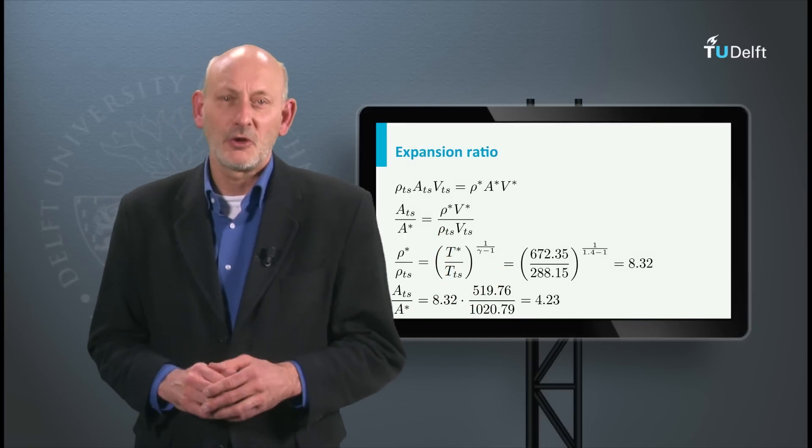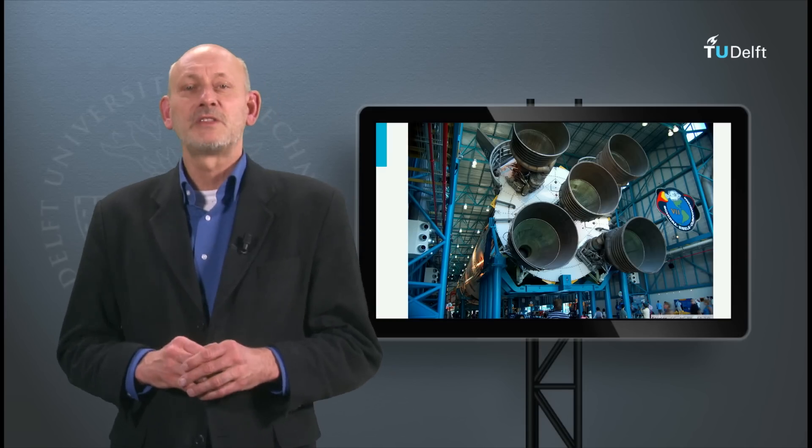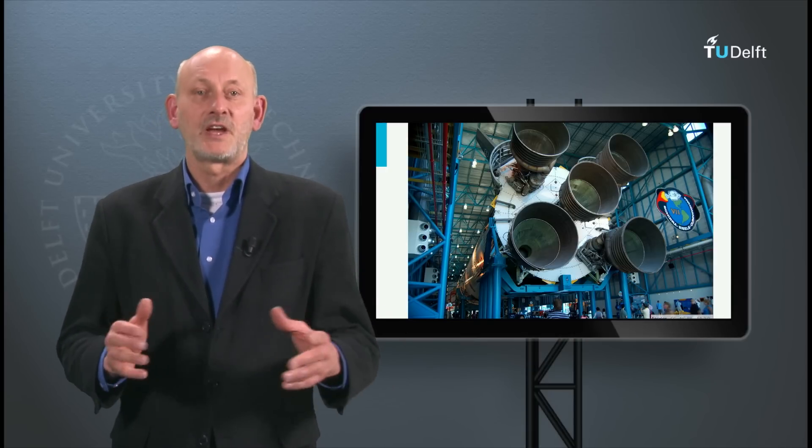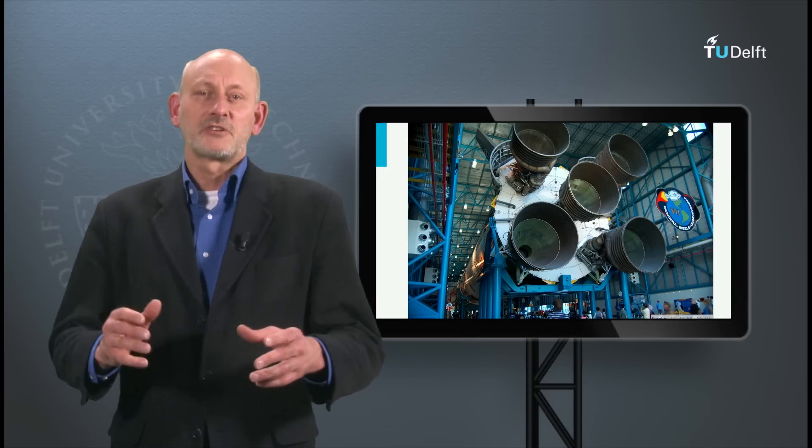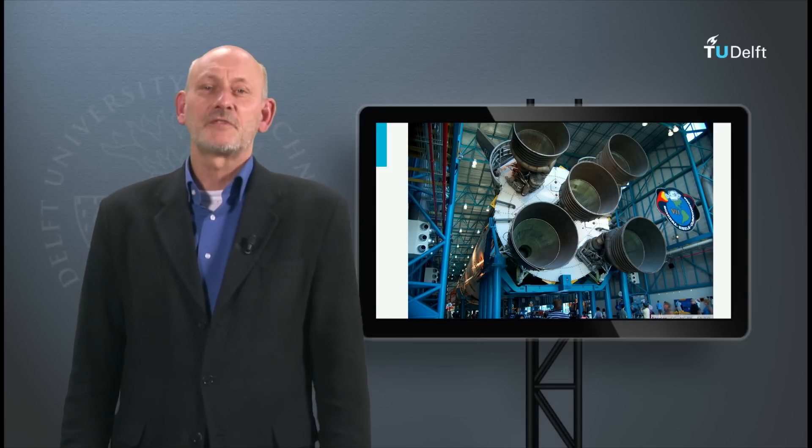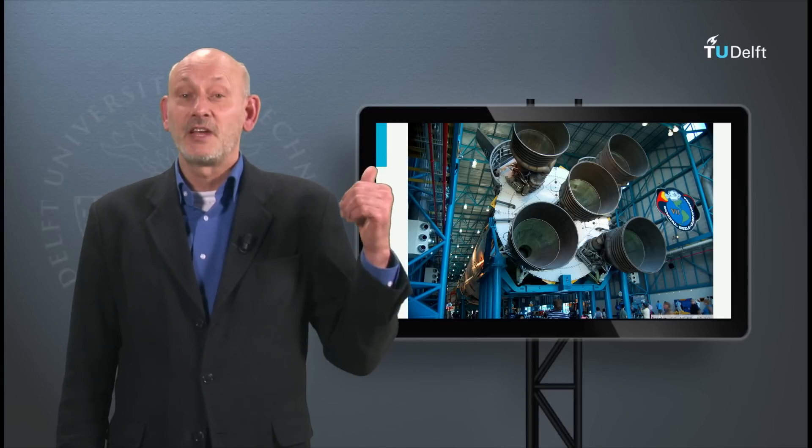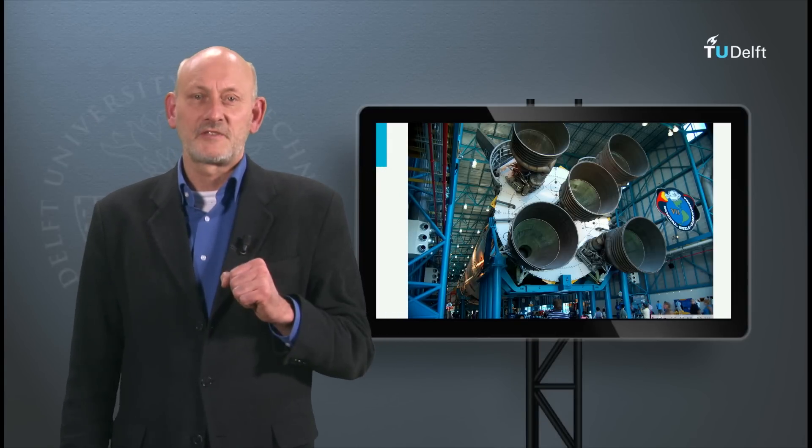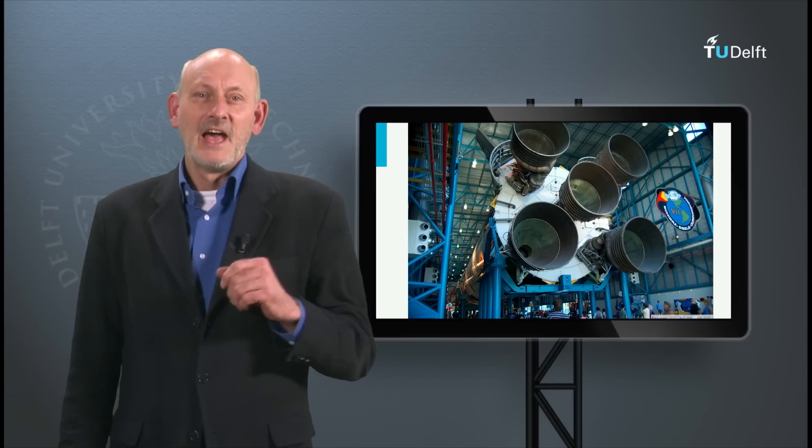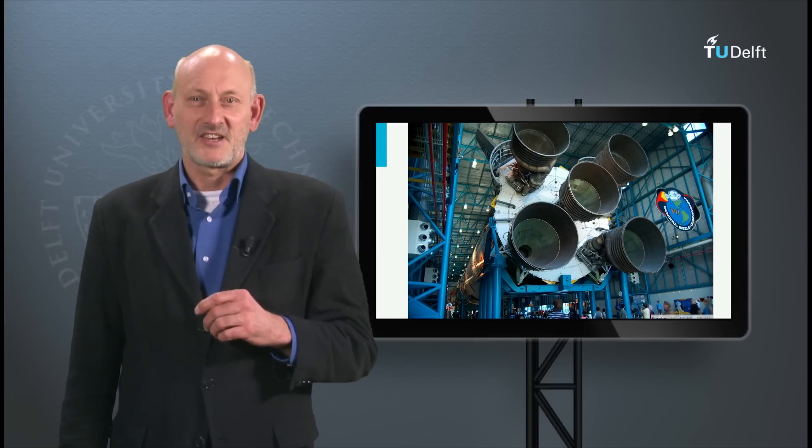This type of calculation can also be done for a rocket engine. Like in the reservoir of the wind tunnel, we assume that the average velocity is zero in the combustion chamber of the engine. The nozzle of a rocket is short, since weight should be kept low. The size of these things can be very impressive, as is shown in this picture. It shows the nozzles of the Saturn V rocket that powered the Apollo flights. Now try for yourself to solve the problem of the rocket engine given in the exercise.